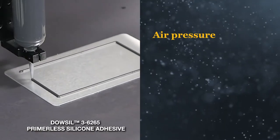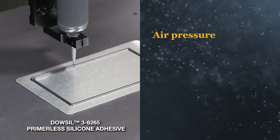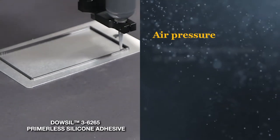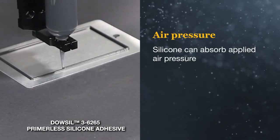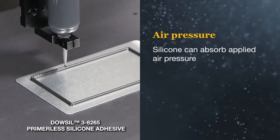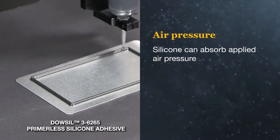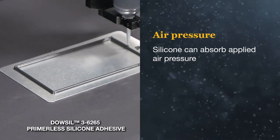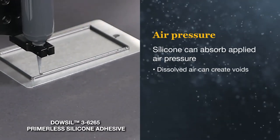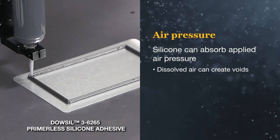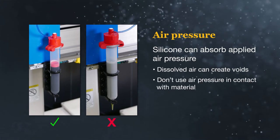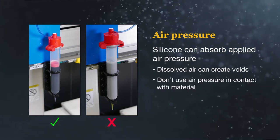Another process that can create voids is the utilization of air pressure during pumping and dispense. Applying air pressure directly on silicone products without a barrier can allow air to be absorbed by the silicone when under pressure. After the pressure is released, the dissolved air can come out as bubbles, which can create voids during the curing process. To mitigate this, best practice is to not use air pressure in direct contact with silicones.